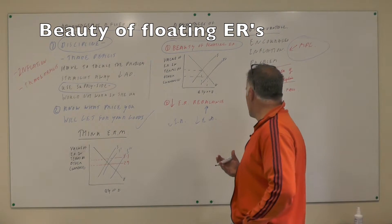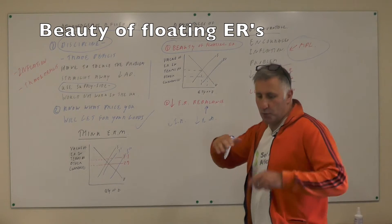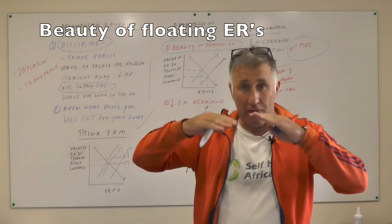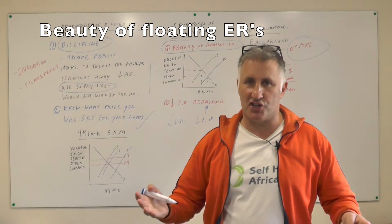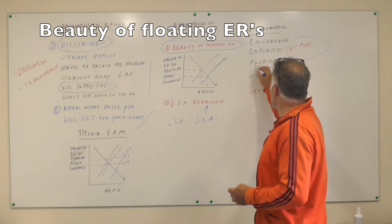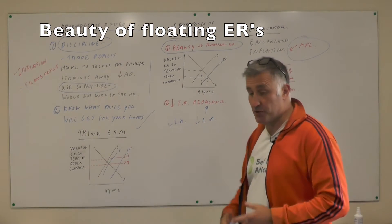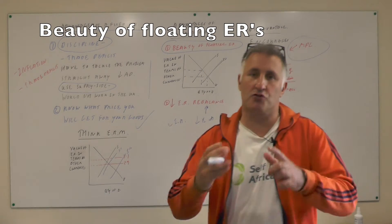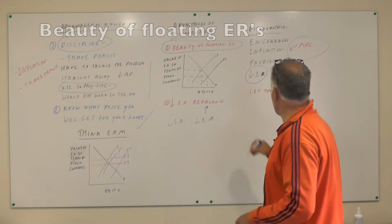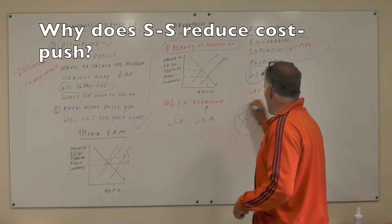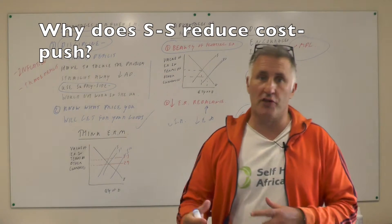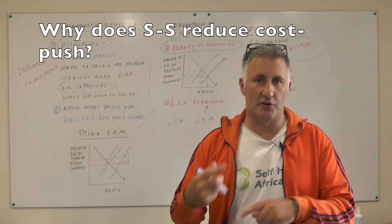The problem of a floating exchange rate is every time we lack competitiveness or our inflation rate is higher than someone else's, we just reduce the exchange rate. However, the UK is in such a mess in terms of its trade deficit that we have to decrease the exchange rate. And hopefully at the same time we will also introduce supply side policies, firstly to make us more competitive, but also that will help to reduce cost-push inflation and demand-pull inflation.